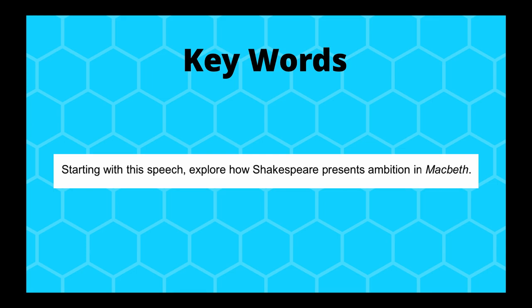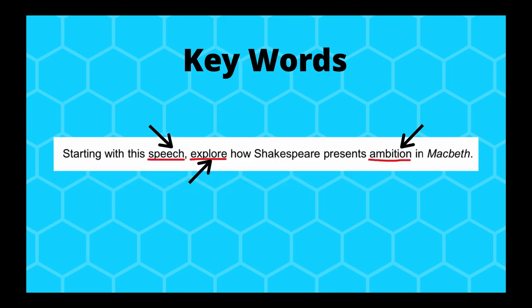Here's an example from a past paper in English literature. The question asks: 'Starting with this speech, explore how Shakespeare presents ambition in Macbeth.' The key words to focus on are: 'speech' (what's been presented to you), 'explore' (talk about interesting language and descriptions), and 'ambition.' I haven't highlighted Shakespeare or Macbeth because it goes without saying — you already know you're focusing on those. The keywords are the less obvious elements.